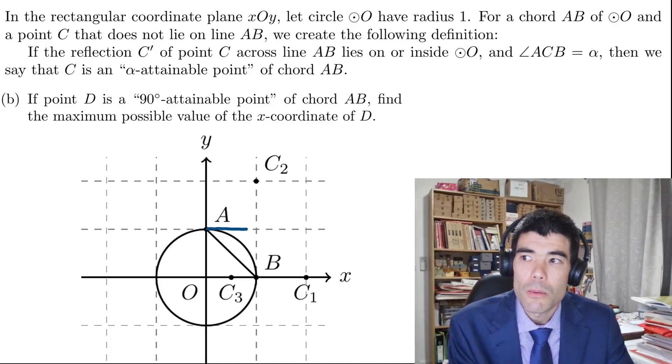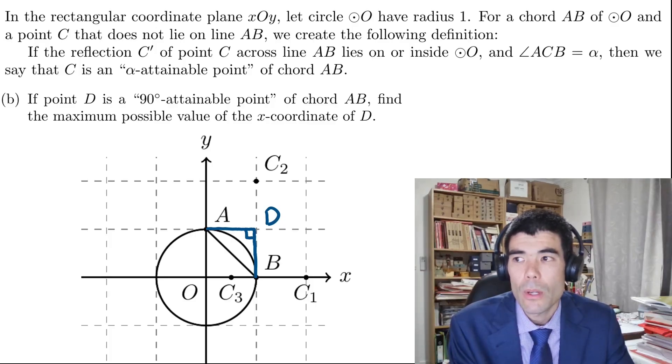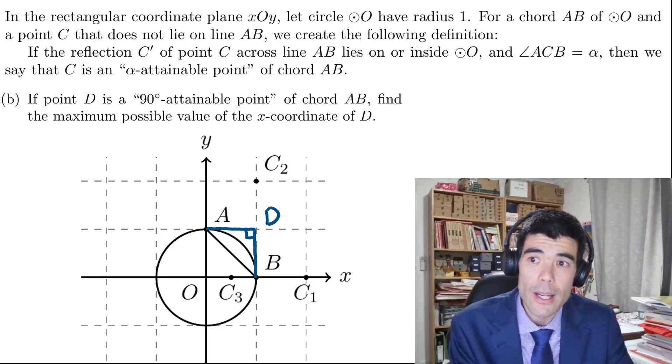Well one possible place where we could place D is here at 1, 1, we'll get a square O, B, D, A, but we want to maximize the x coordinate of D. We could place D slightly further to the right and if we think about the location or the locus of point D, all possible locations,